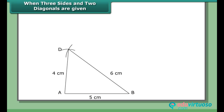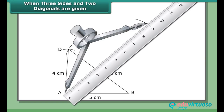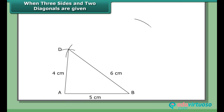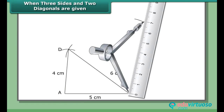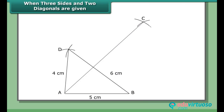Join AD and BD. With A and B as centers and 9 cm and 7 cm as radii respectively, draw arcs to cut each other at C. Join AC and BC, and also join DC.